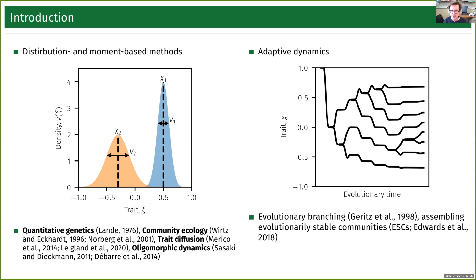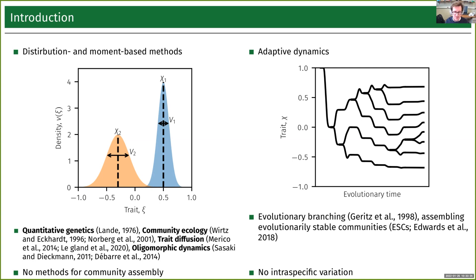Both of these frameworks have their benefits, but they also have their drawbacks. For the distribution and moment-based frameworks, we don't really have any good methods for community assembly. Whereas in the adaptive dynamics case, we cannot track intraspecific variation — there is no variance in these traits for each species or ecotype.